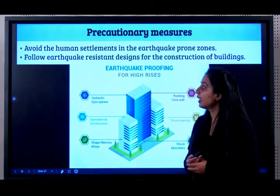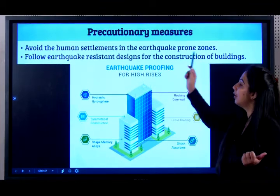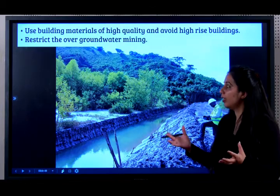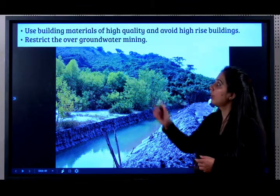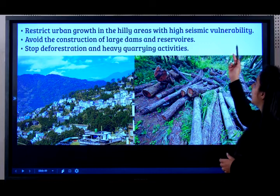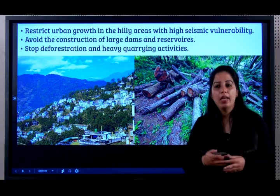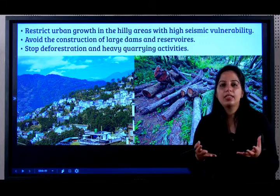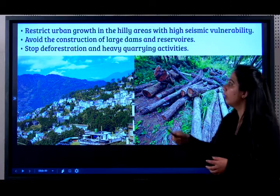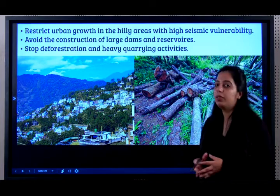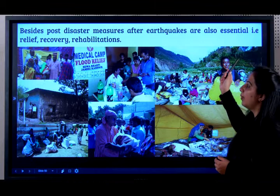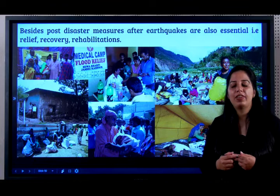What are the precautionary measures for earthquakes? Avoid any kind of human settlements in earthquake-prone areas. Follow earthquake-resistant designs in buildings. Use high-quality building materials and avoid high-rise buildings. Restrict the over-mining of underground water. Restrict urban growth in hilly areas with high seismic vulnerability — meaning areas prone to plate movement where earthquakes are known to happen. Avoid construction of large dams and stop deforestation and heavy quarrying activities. Post-disaster measures for relief, recovery, and rehabilitation of affected people are also established.